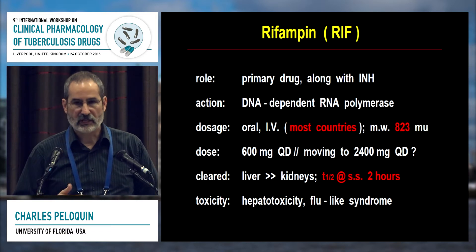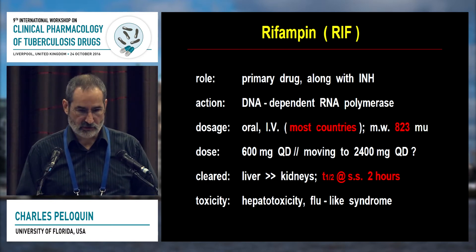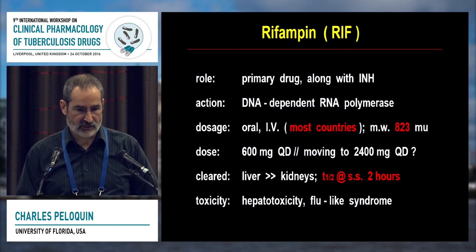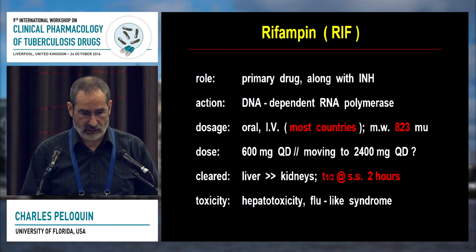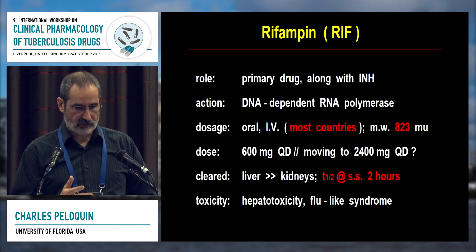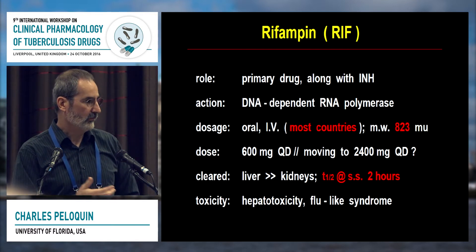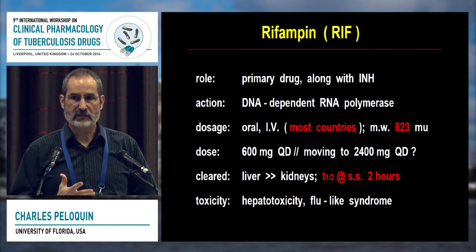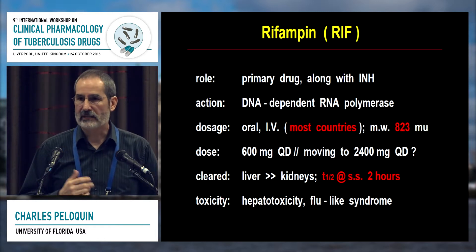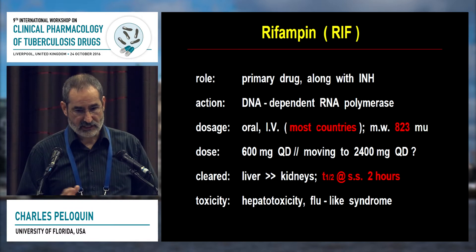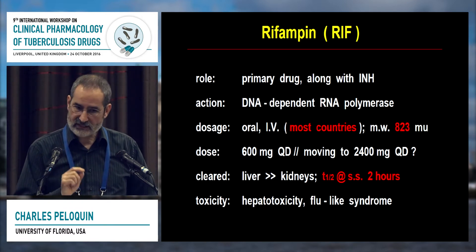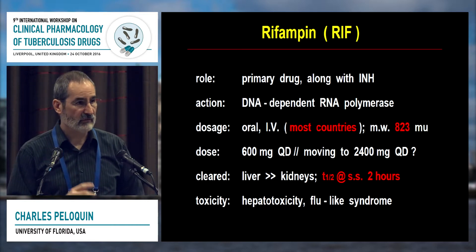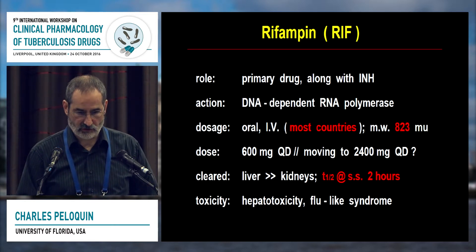It's a primary drug, and it's used with isoniazid. You know the mechanism of action. It's available virtually in all countries, and it has a molecular weight of 823. The standard dose we use is 600 milligrams, though the dose is probably too small and may move as high as 2,400 milligrams, though that's not determined yet. At steady state, the drug has a very short half-life of about two hours, which is a shortcoming.